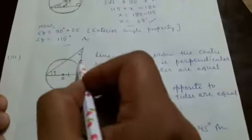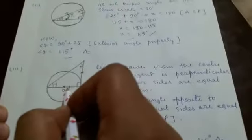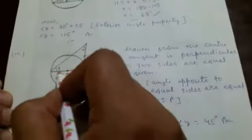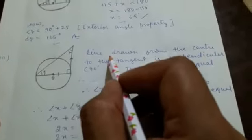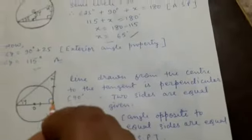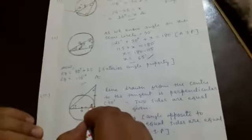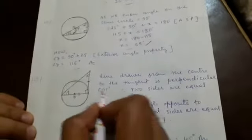The next question: this figure is given and these two sides are equal. We have to find the value of x and y. The line drawn from the center to the tangent is a perpendicular line. This is the tangent point and this is the tangent line, so this angle will be 90 degrees. By angle sum property: x plus y plus 90 equals 180 degrees.